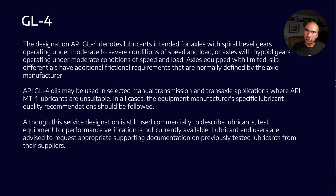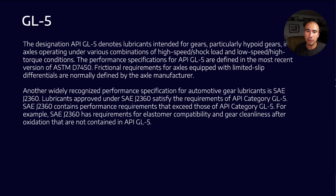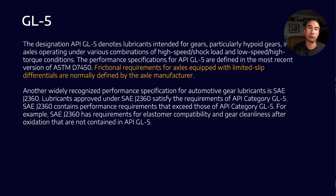What else can we tease out from the API designations? From GL4 onward, axles equipped with limited slip differentials have additional frictional requirements that are normally defined by the axle manufacturer. With oils for limited slip, it'll typically be indicated by an 'LS' designation. The same kind of language applies for API GL5. This is partly because there are a number of different ways to construct a limited slip differential, each with different frictional requirements, which is why OEM requirements become much more important in limited slip diffs than in open diffs.